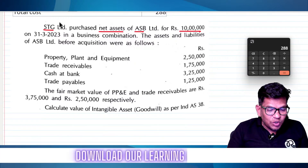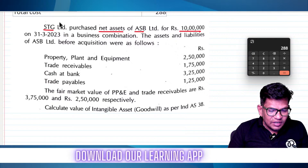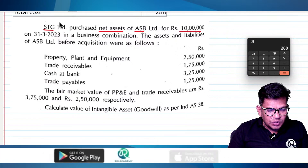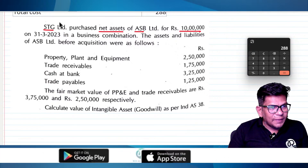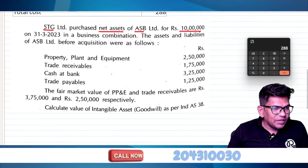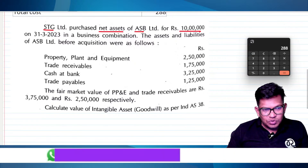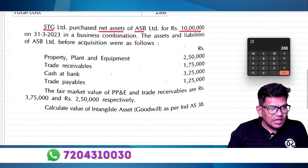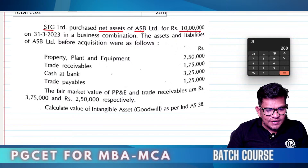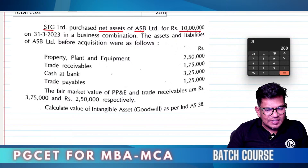We start with intangible assets — goodwill and patents. According to that, we have to solve this. Fixed assets cannot be taken here directly.